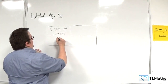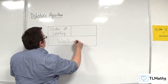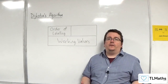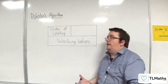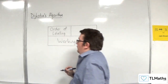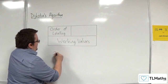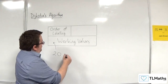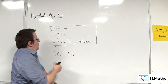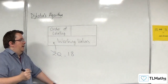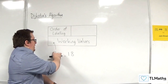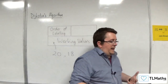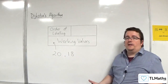In the bottom box, this is our working values box. These are the values that we consider along the way that could be our shortest distance up to that point. As we work through, this box will fill up. So it might start off with 20, for example, and then we might find a shortest distance which is 18. Some people will put a line through the 20 and have the 18 there.